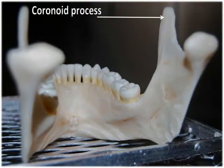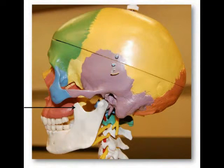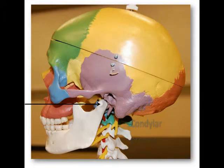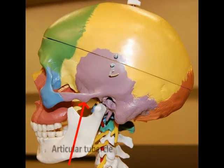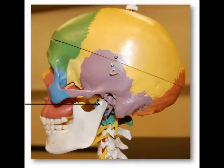The tooth-like coronoid process is an insertion point for the temporalis muscle. The rounded condylar process articulates with the mandibular fossa and articular tubercle of the temporal bone to form the temporomandibular joint, or the TMJ.